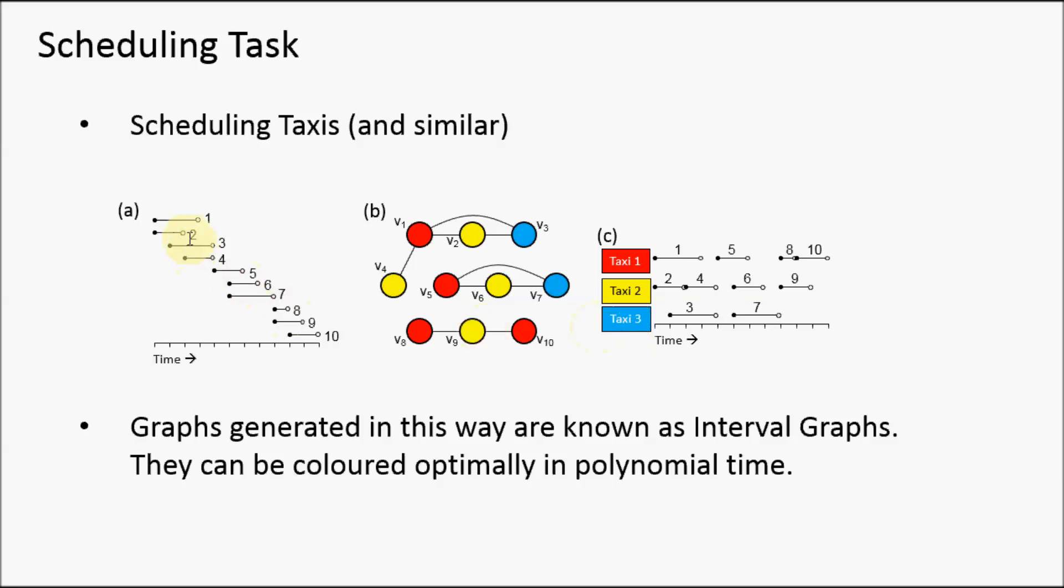All we need to do is order the vertices in terms of their starting times, as we've done here. Then just apply the greedy algorithm using vertex one, then two, then three, and so on, and we will always get an optimal solution. A proof of that can be found in the book I referenced earlier.